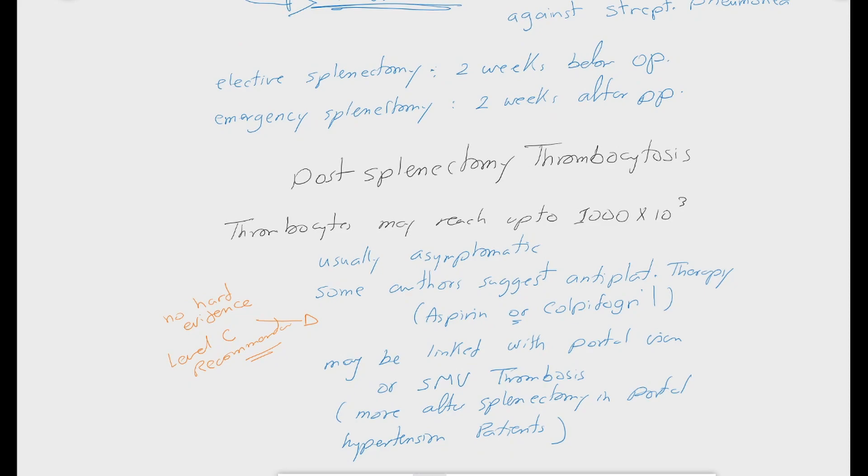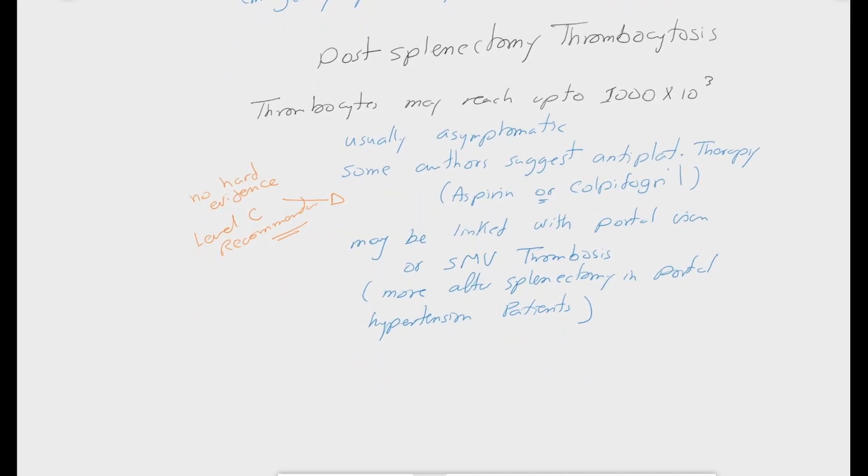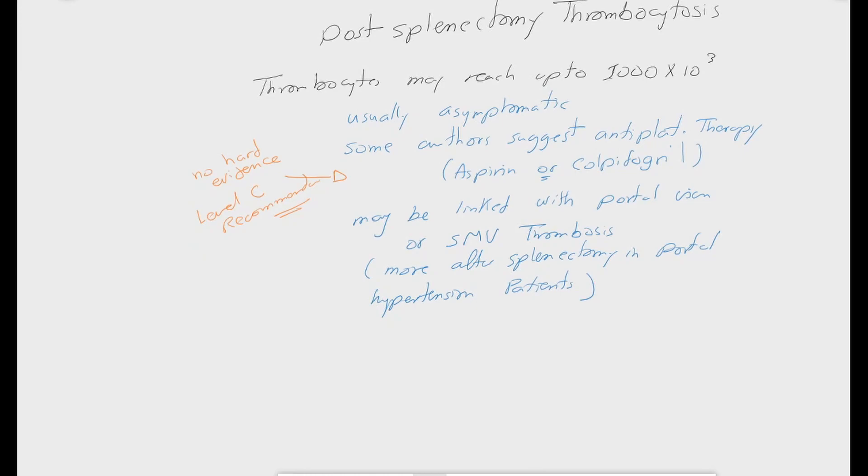Lastly, the post-splenectomy thrombosis usually occurs due to the absence of the splenic function of storage of the platelets. The platelet count can rise up to 1 million per cubic millimeter. It is usually asymptomatic. But some authors suggest a prophylactic antiplatelet therapy, like aspirin or clopidogrel. This remains a level C recommendation, depending on expert opinion, without harder statistical evidence. It also may be linked to portal vein thrombosis or mesenteric vein thrombosis. This is more common after splenectomy in patients with portal hypertension.